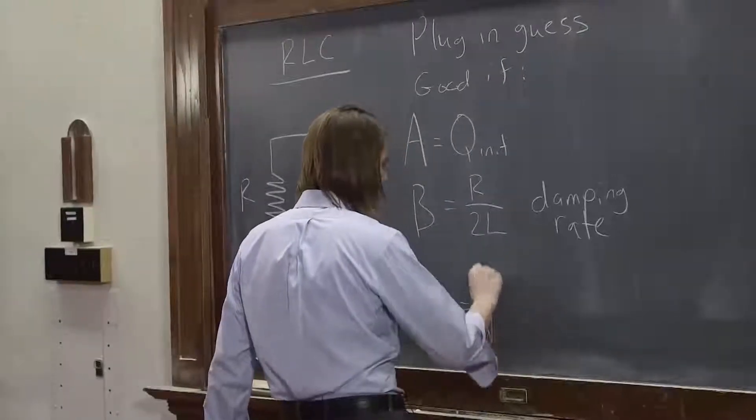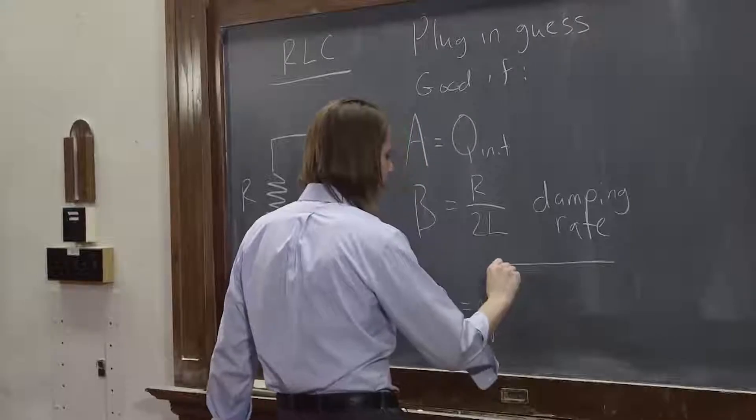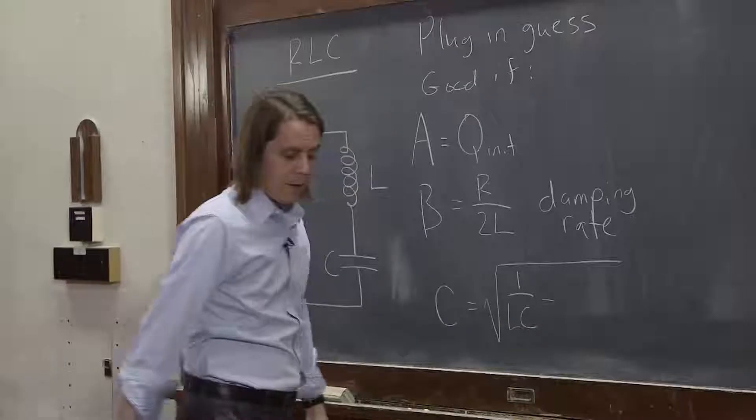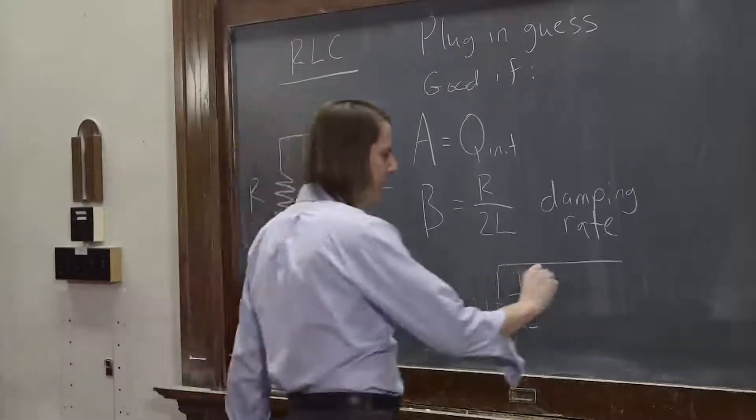I didn't mean to do something this bad, though. So C is the square root of 1 over LC minus R over 2L squared.